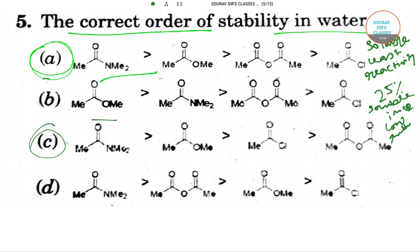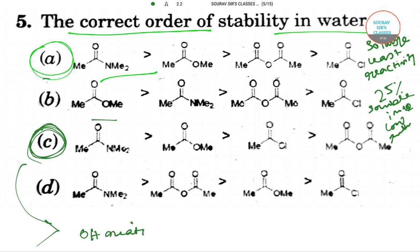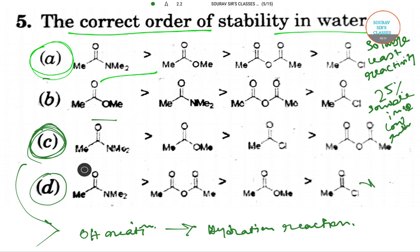Structure 3 will react with OH⁻ ions and will undergo a hydration reaction. Structure 4 (option D) will readily react with water. So the correct order of stability in water is being determined from these reactivities.